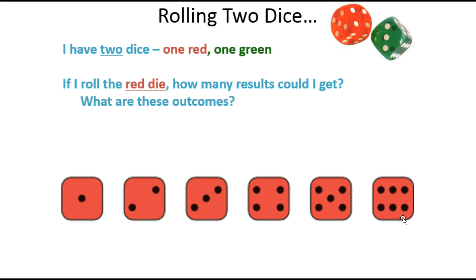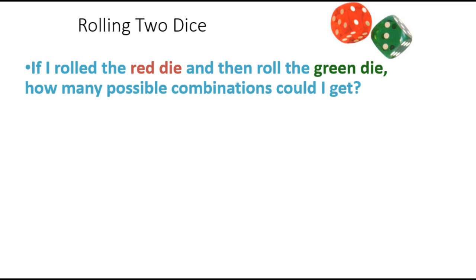Now the question comes in: if I were to roll the red die, then roll the green die, or maybe at the same time, it doesn't really matter, how many possible combinations can I get? So I'm going to be rolling these both at the same time or one right after the other. They're independent, so it doesn't really matter what order we do them in.